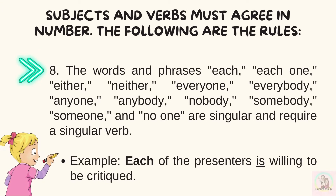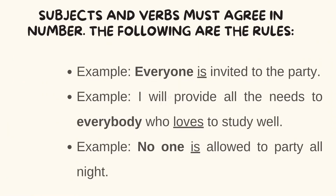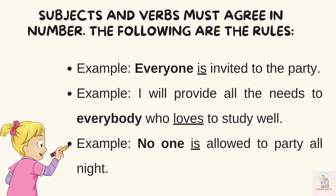Number eight, the words and phrases each, each one, either, neither, everyone, everybody, anyone, anybody, nobody, somebody, someone, and no one are singular and require a singular verb. Example: each of the presenters is willing to be critiqued. More examples: everyone is invited to the party. I will provide all the needs to everybody who loves to study well. No one is allowed to party all night.